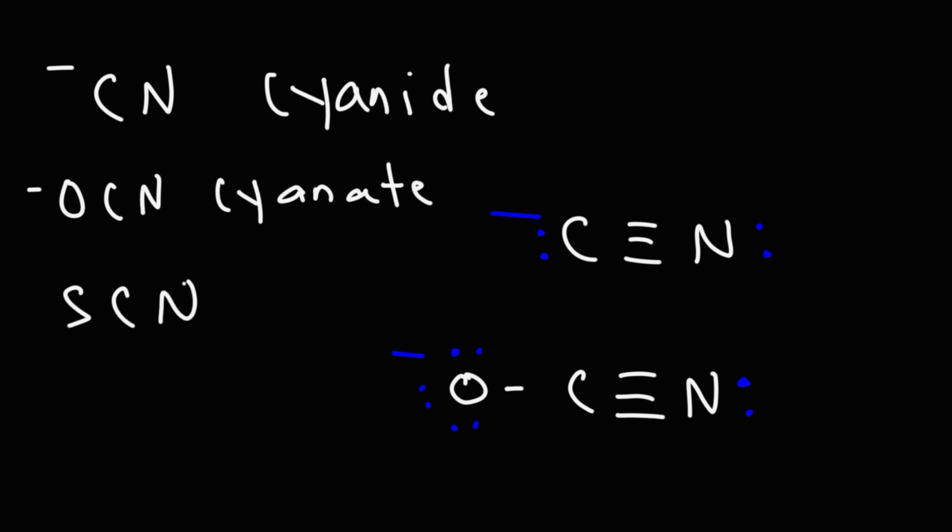Next one, SCN minus. This is thiocyanate. Thiocyanate is very similar to cyanate. The difference is, instead of the oxygen, you have the sulfur. Sulfur and oxygen exist in the same group of the periodic table. They're in the same column, so their structure is going to be similar as a result. This is the structure for thiocyanate.